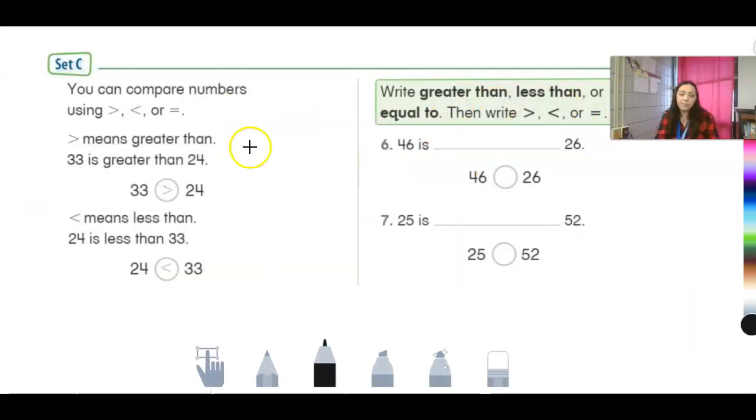All right. And here's those new symbols that we talked about this week. It says you can compare numbers using, now look, this one's open towards the bigger number. So this is going to be the greater than symbol because you're saying the first number is greater than the next number. And then what about this symbol? The symbol is pointed at the front. So it is less than. Very good. And then this is the equal sign. So remember if it's pointed forward, like if it's open forward, it means greater than. 33 is greater than 24. If it's got the point at the front and it's open towards the next number, it means less than. 24 is less than 33.